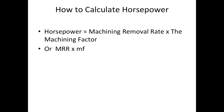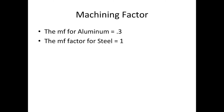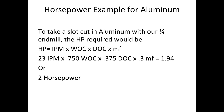For horsepower, we take the material removal rate (MRR) times the machining factor (MF), also called the power factor. The machining factor for aluminum is 0.3, and for steel it is 1.0. For our slot cut — engaging the full 3/4 inch cutter width at a depth of 0.375 — we take 23 inches per minute times 0.75 (width of cut) times 0.375 (depth of cut) times 0.3 (machining factor), which equals approximately 1.94, or about 2 horsepower.